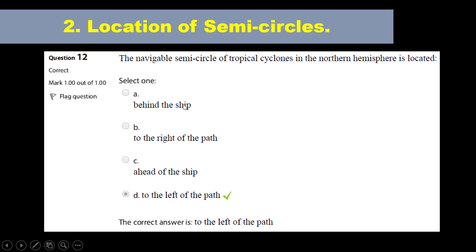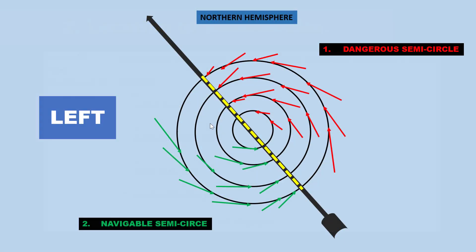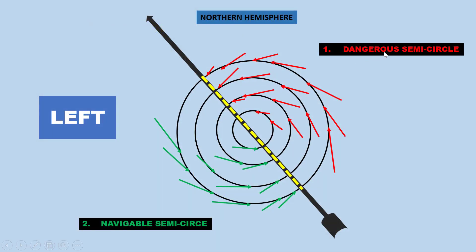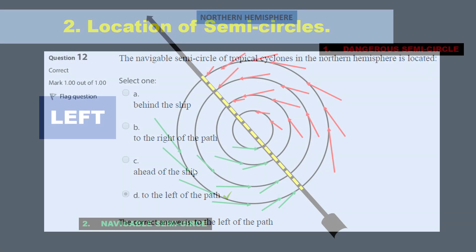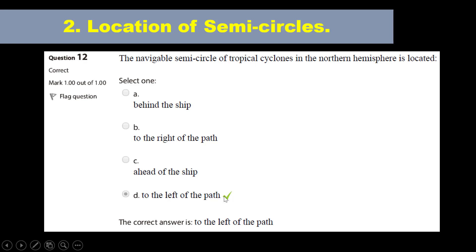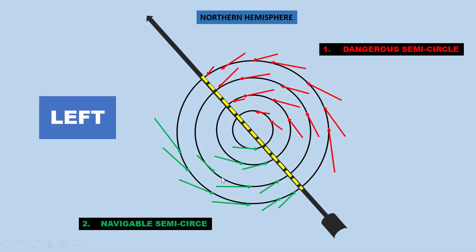There is nothing like 'behind the ship' or 'ahead of the ship' as reference points. To the right of the path, we have the dangerous semicircle in the northern hemisphere. You won't use the direction the cyclone is coming from to determine which semicircle is which. So the correct answer is to the left of the path — this is the navigable semicircle.